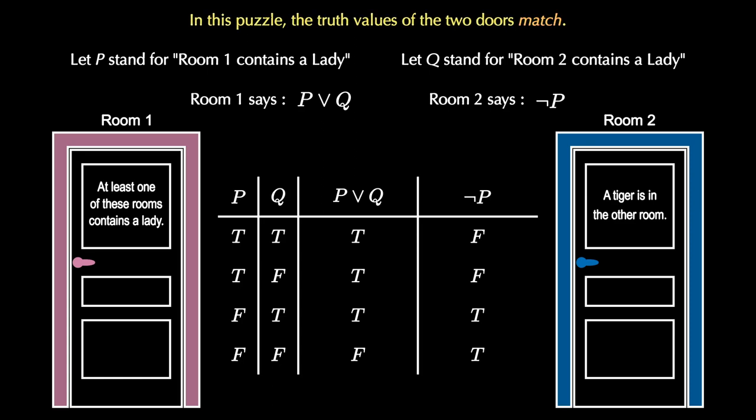But now remember that the key setup to the puzzle is that the two truth values of the doors match. This only happens in row three where both doors are true. Therefore, we know that we're in the situation where P is false and Q is true.